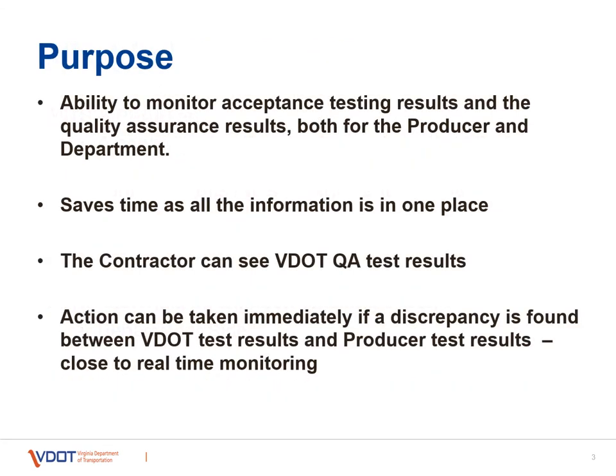The purpose of this system is to help share the data between the producer and the department, since VDOT is using the producer test results for quality assurance. It helps save time, as time is money for all of us, and we want to get the information to each other as quickly as possible to make decisions. The contractor can also see VDOT QA test results as they become available, and all this is important to help action be taken as quickly as possible if there is any issue with the asphalt test results.